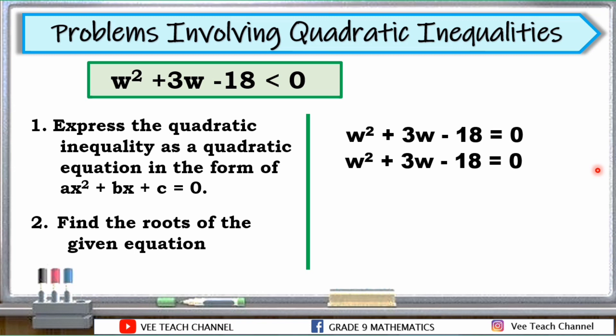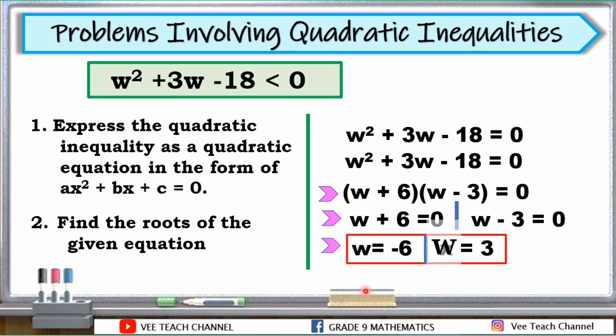Next, find the roots of the given equation. We will apply factoring. Think of factors of negative 18. Factors of negative 18 when added, the answer is 3. And of course, don't forget to factor out W squared. And we have these factors. We'll put two parentheses and the factor of W squared is W and W. The factors of negative 18 that the sum is positive 3, that is 6 and negative 3. Let us check. 6 times negative 3 is negative 18. 6 plus negative 3 is positive 3. Let's equate each factor to 0. W plus 6 is equal to 0, and W minus 3 is equal to 0. And we can solve now for the values of W. W is equal to negative 6, and W is equal to 3. These are the roots of our equation.